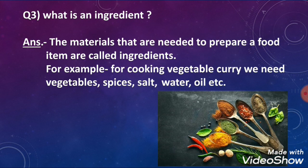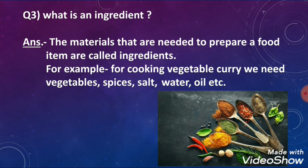Next we will see: what is an ingredient? Ingredients are the materials used to cook a food item — all the materials required to prepare a food item are called ingredients. For example, to make a vegetable curry, you need the vegetable, spices, salt, water, oil, etc. Similarly, to cook pulses, you need pulses, water, salt, spices, oil, and other things.